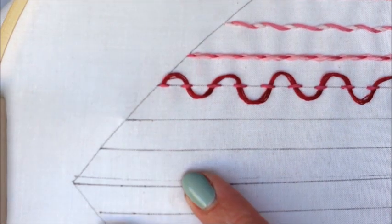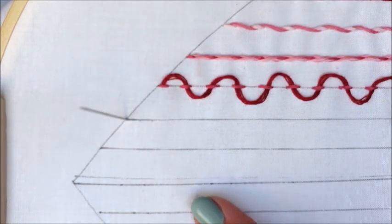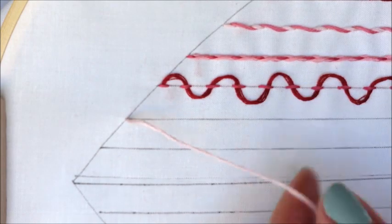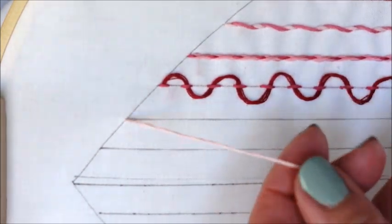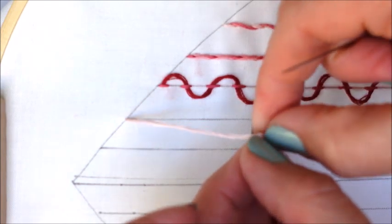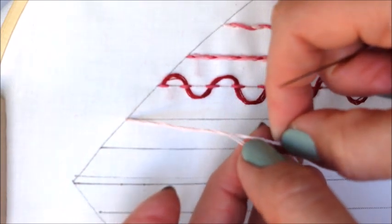To do the split stitch, bring your needle up at the end of your stitching line. For a split stitch, you're going to be splitting the threads, and I find it's easy to do at the beginning after you've brought your thread through.